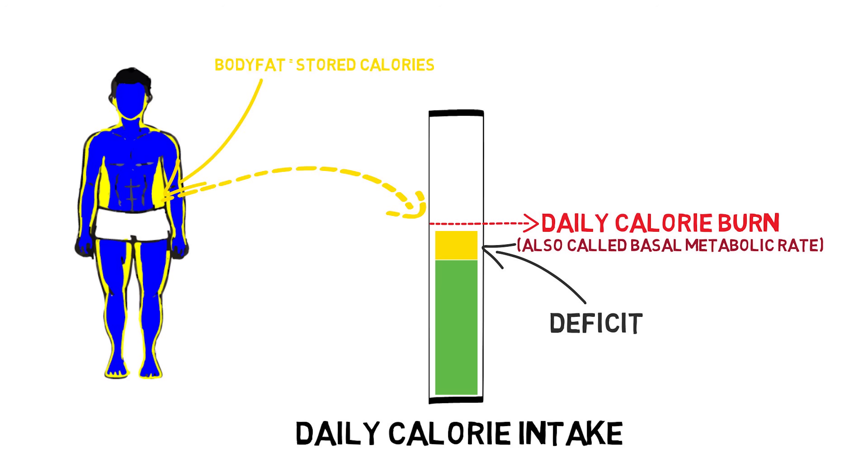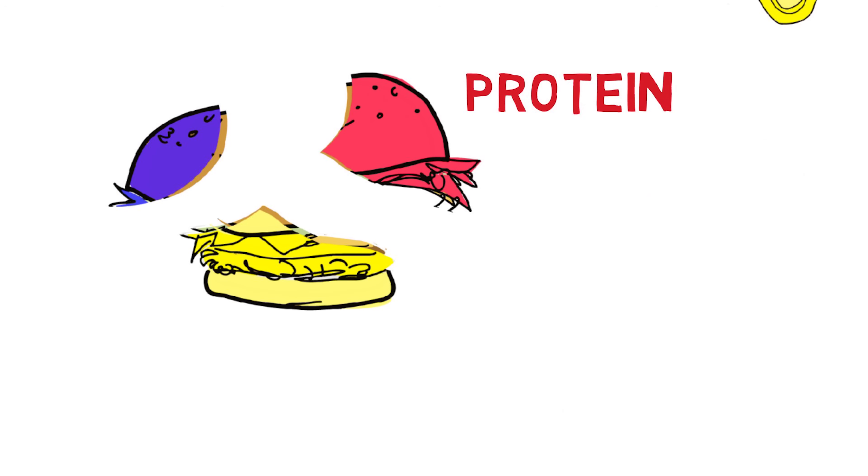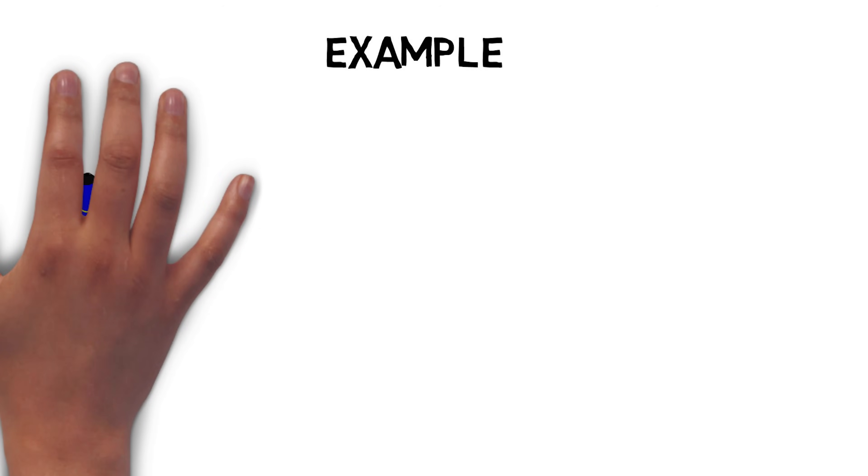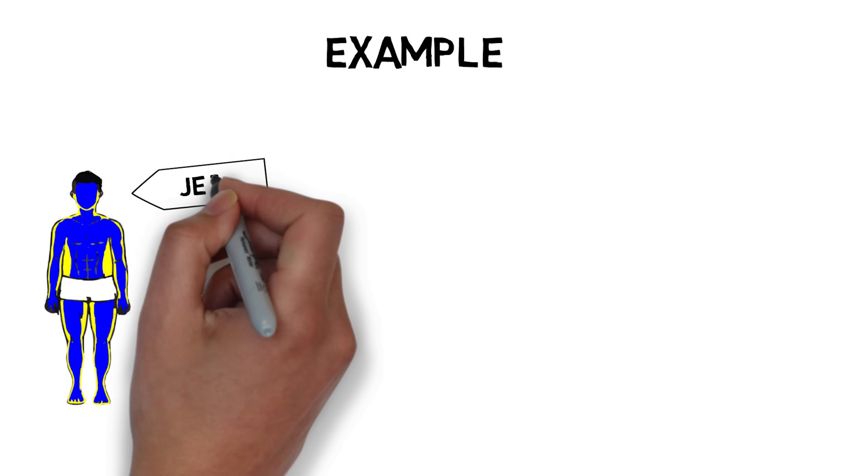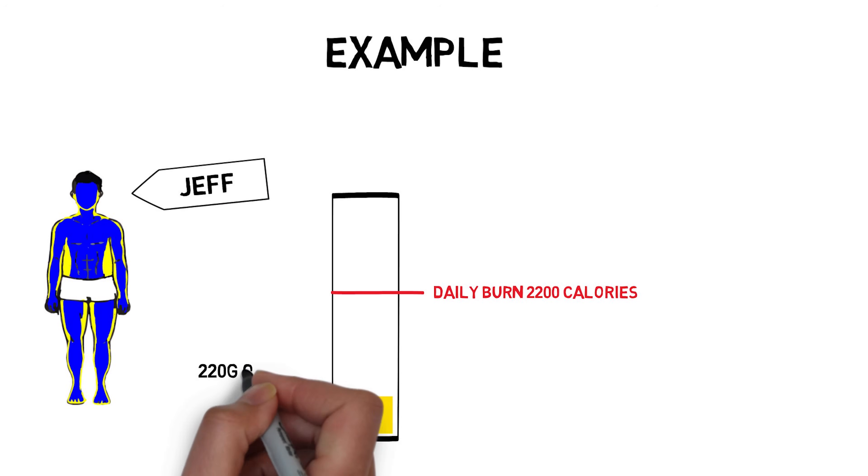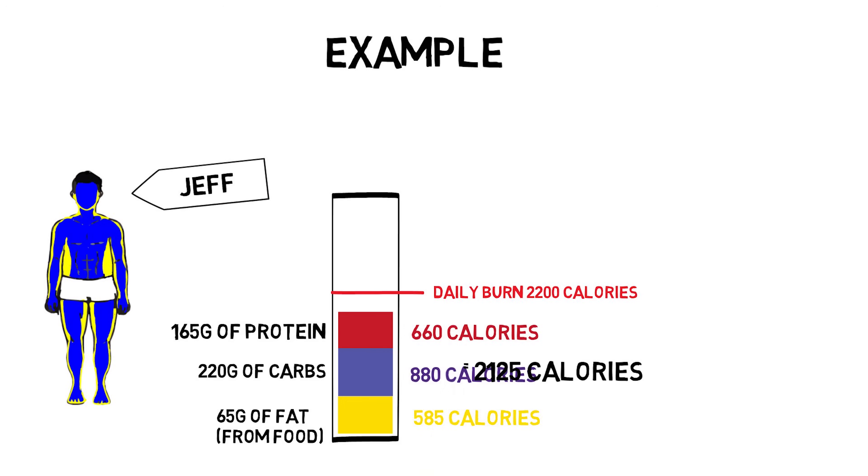People who follow the IIFYM diet will calculate how many calories their body burns in a day, and then eat less than that amount. This creates what is called a deficit, and forces your body to tap into some of that stored energy, fat, to make up the difference. The way they control their calories is by looking not at specific foods, but at what they are made of.